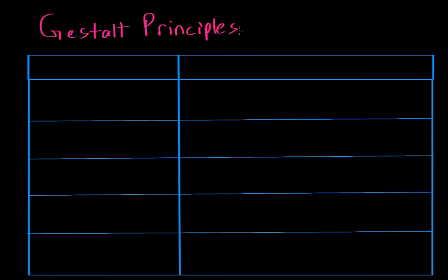The Gestalt Principles basically seek to explain how we perceive things the way we do. So why is it that we don't tell ourselves the basketball game is just a bunch of pictures, but rather that it's a fluid, realistic representation of a basketball game? There are several different laws or principles that the Gestaltists came up with, and we're going to look at each one of these with an example.